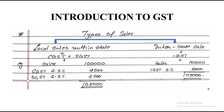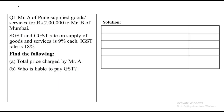Now we will take up two problem sums to understand how GST is calculated, who is liable to pay GST, and what will be the total amount the buyer needs to pay. Problem sum one: Mr. A of Pune supplied goods and services worth ₹2 lakhs to Mr. B of Mumbai. Since Pune and Mumbai are both in Maharashtra, it is a local sale. The CGST and SGST rate is nine percent each and the IGST rate is eighteen percent.